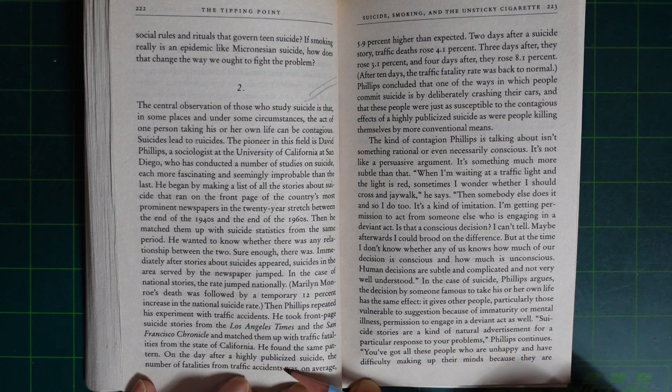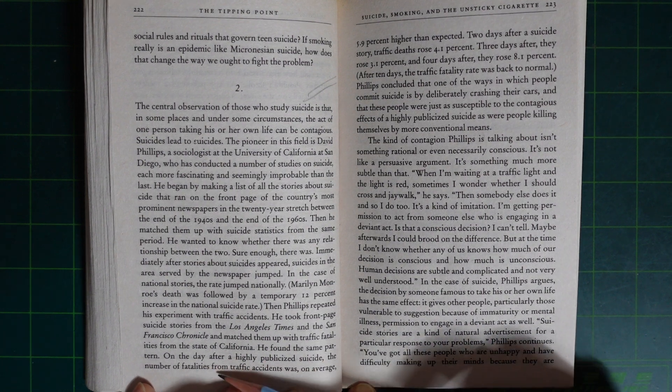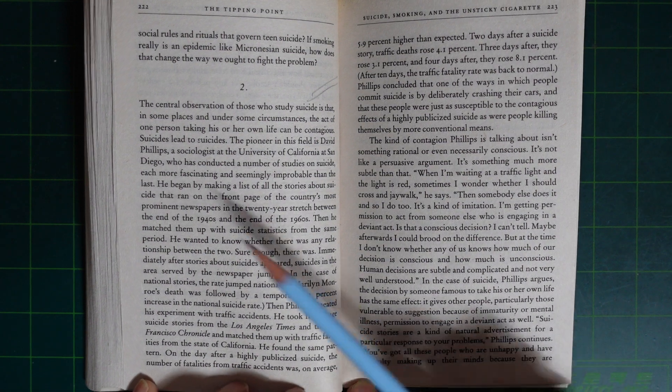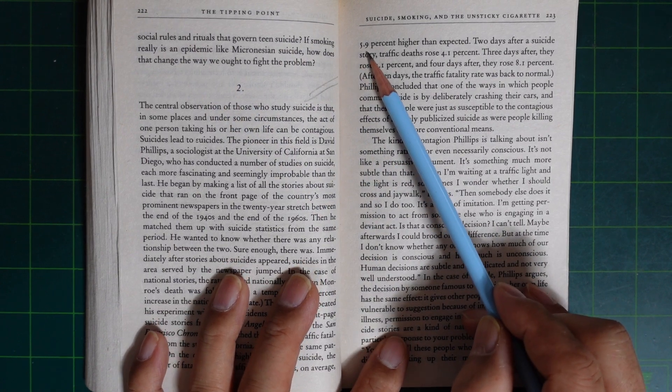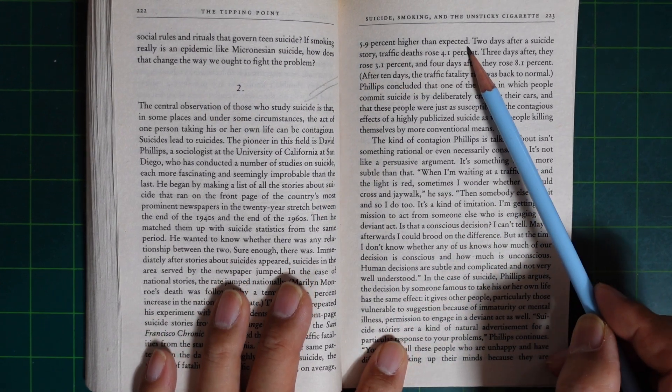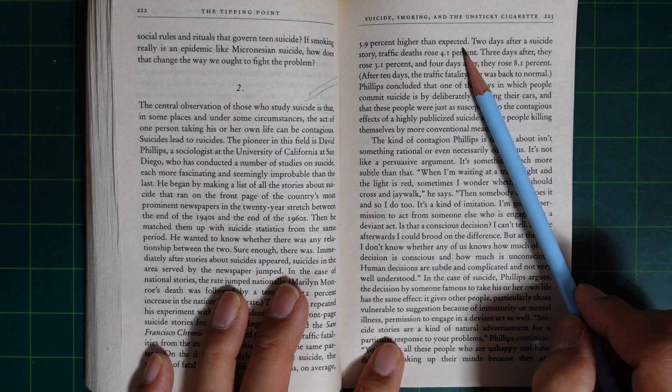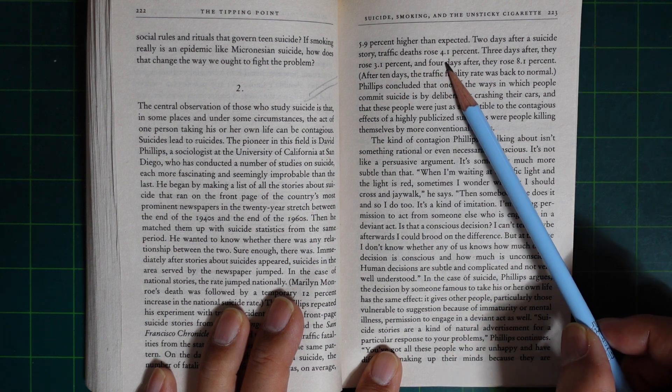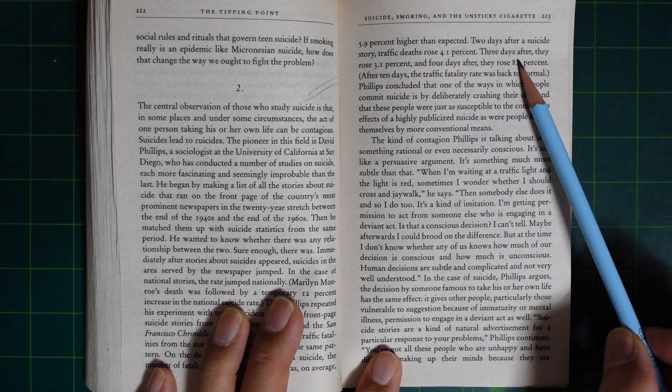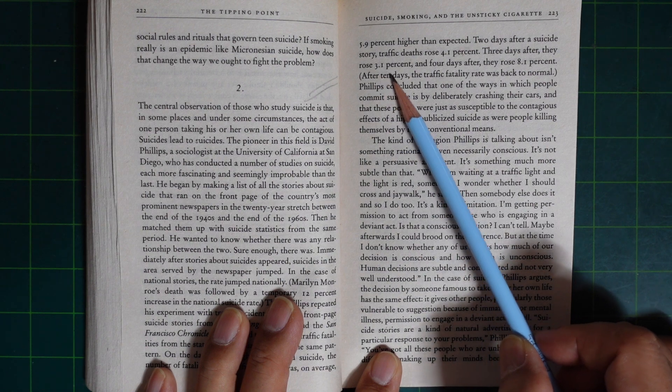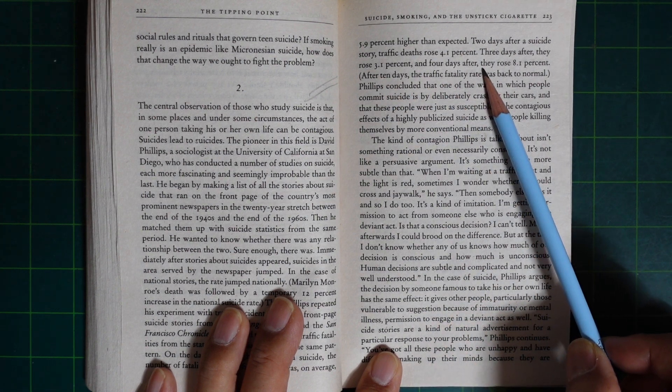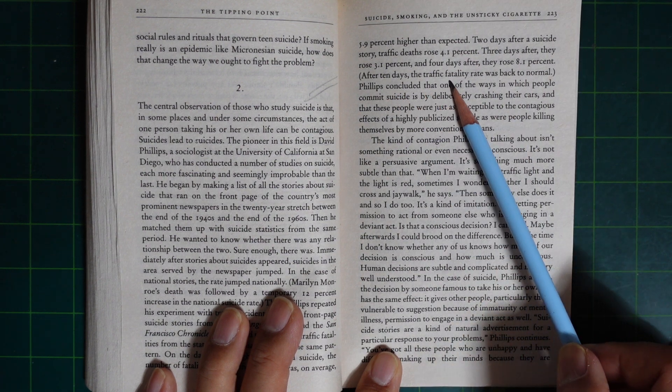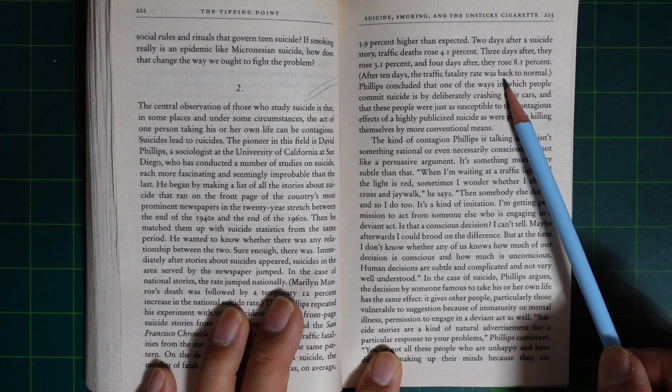On the day after a highly publicized suicide, the number of fatalities from traffic accidents was on average 5.9 percent higher than expected. Two days after a suicide story, traffic deaths rose 4.1 percent. Three days after, they rose 8.1 percent. After 10 days, the traffic fatality rate was back to normal.